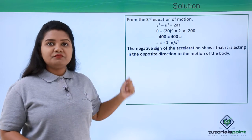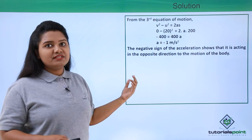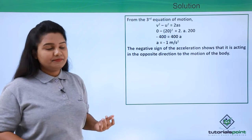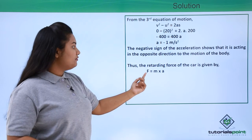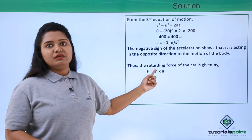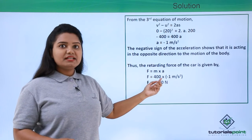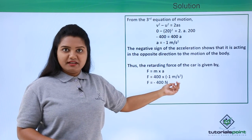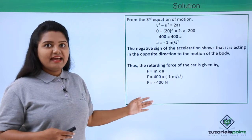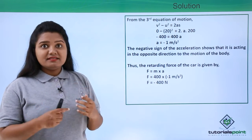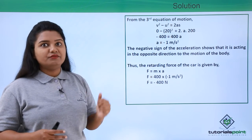Since we have calculated the acceleration, we can now find the retarding force using Newton's second law: F = ma. Substituting the values, force = 400 × (−1) = −400 Newtons. The force is again negative, which means the retarding force acts in a direction opposite to the motion of the car.